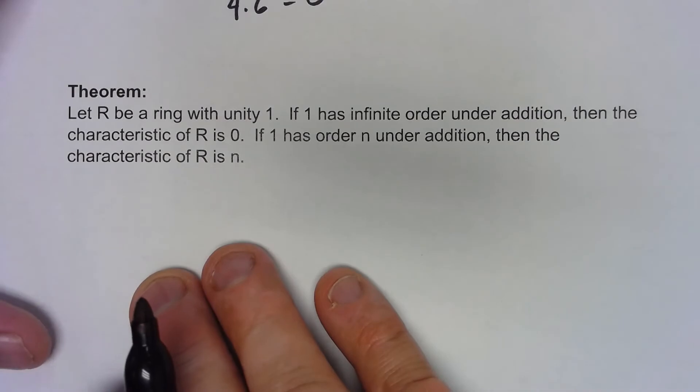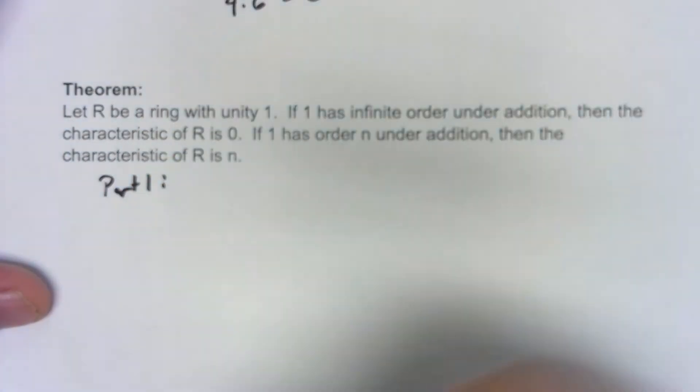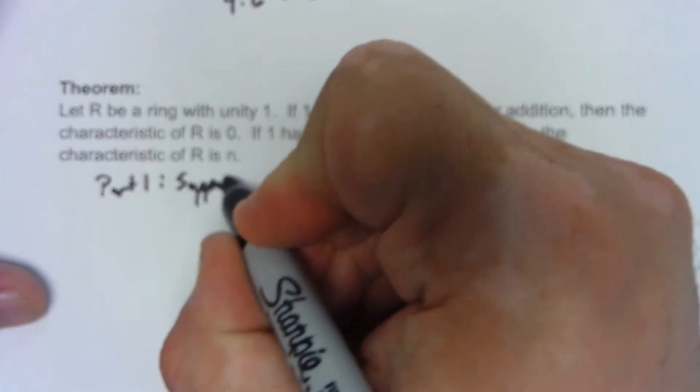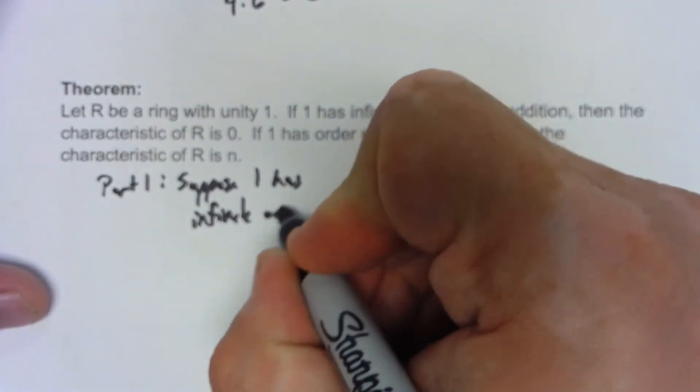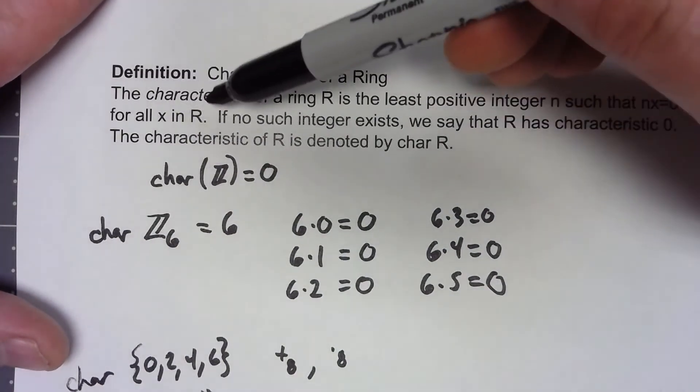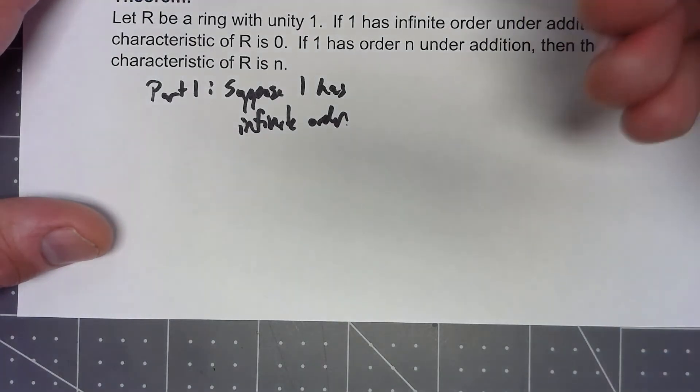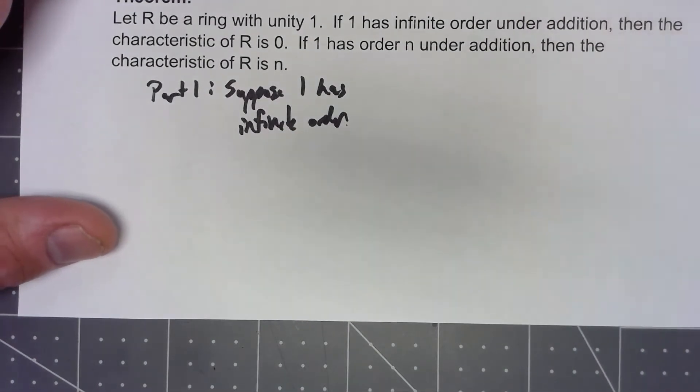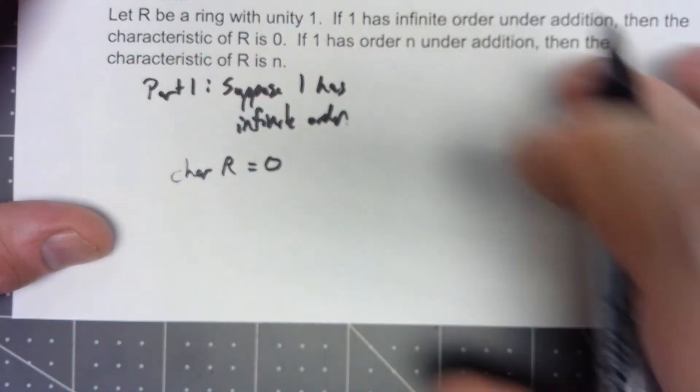There's kind of two things to prove here. Part one: suppose 1 has infinite order. Well, if we go back to our definition, the characteristic has to work for all x in R, and by saying that 1 has infinite order, that means that there is no integer that works for that. So right away, that means that the characteristic of R is 0. Nothing to it.